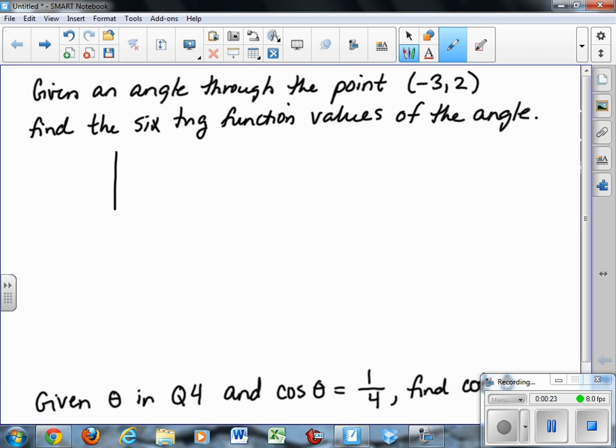So this would be an angle that is in quadrant 2, because I have to go negative 3 and positive 2. This would be the point that the angle's going through. So my angle is going to start on 0 like normal, and its terminal side goes through this point. So here's the angle in question.